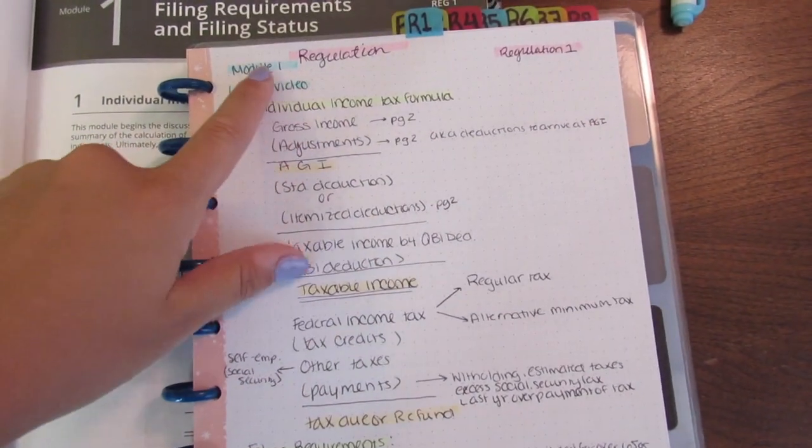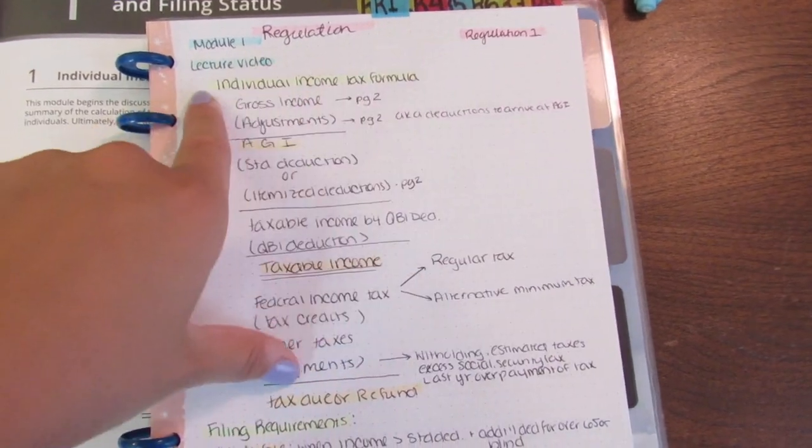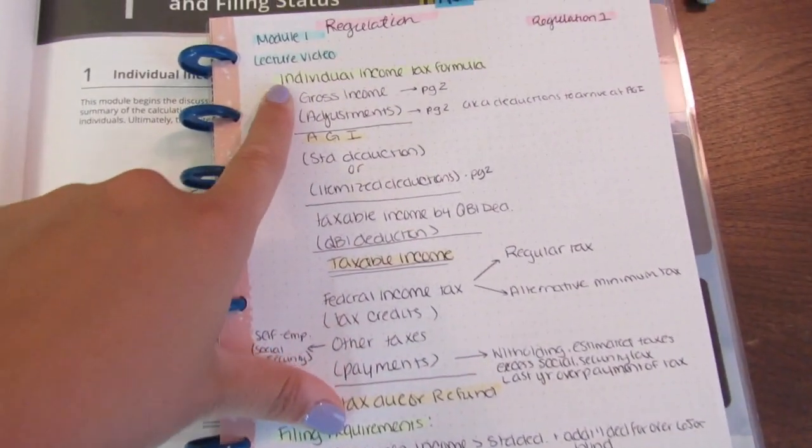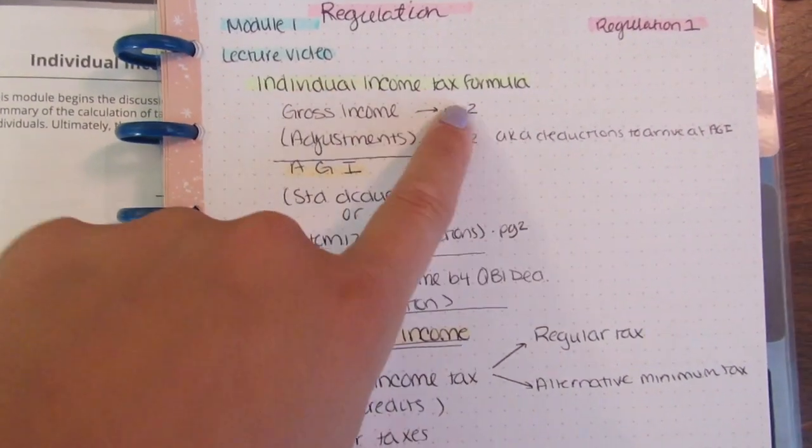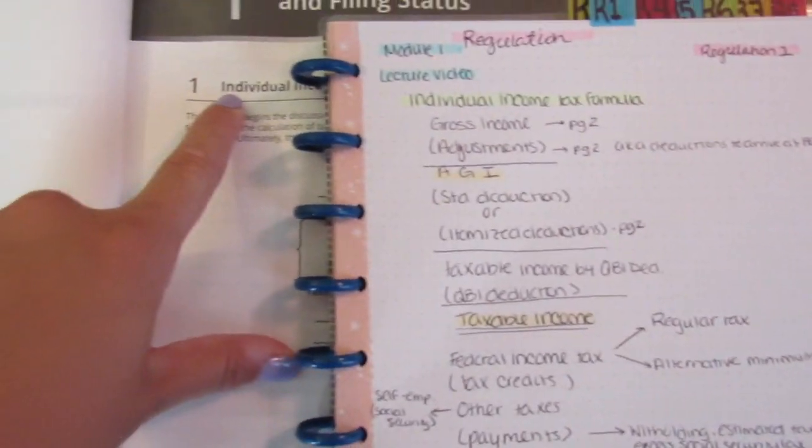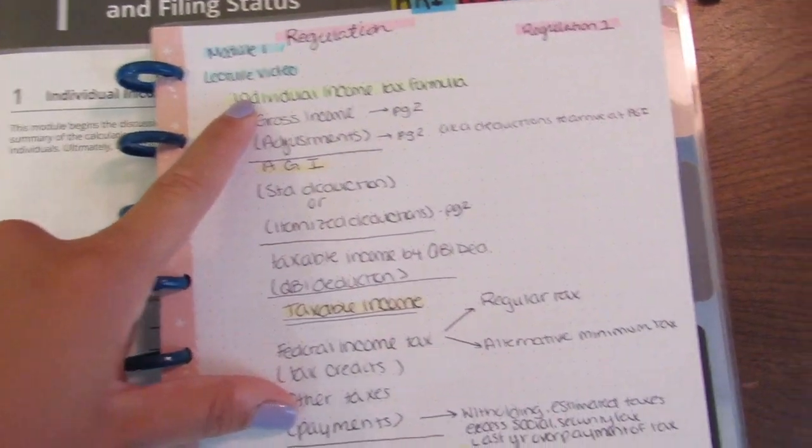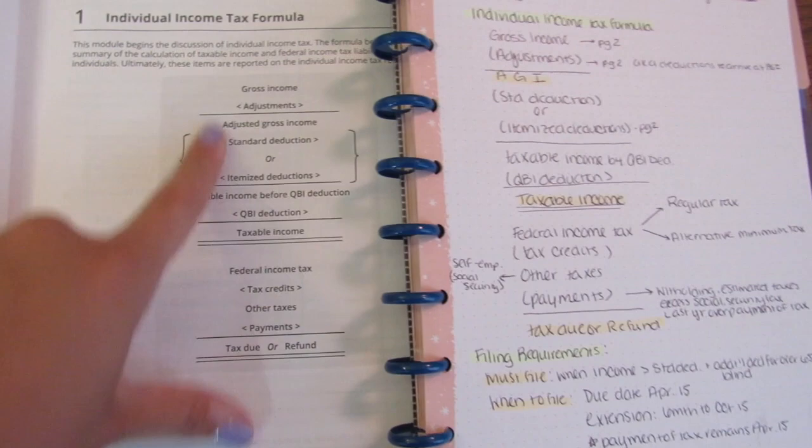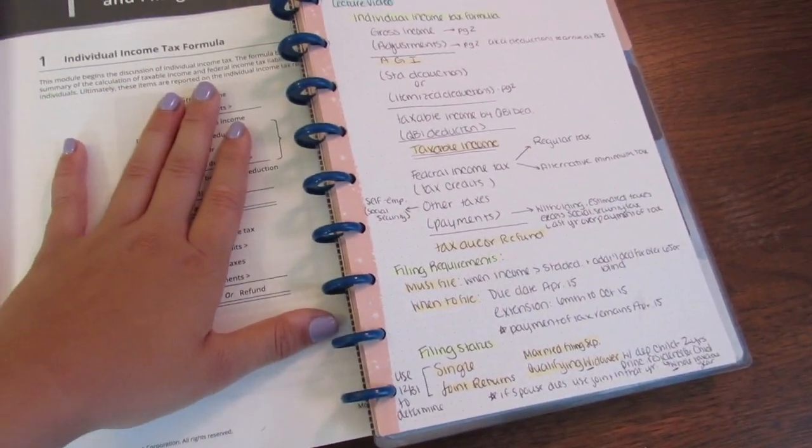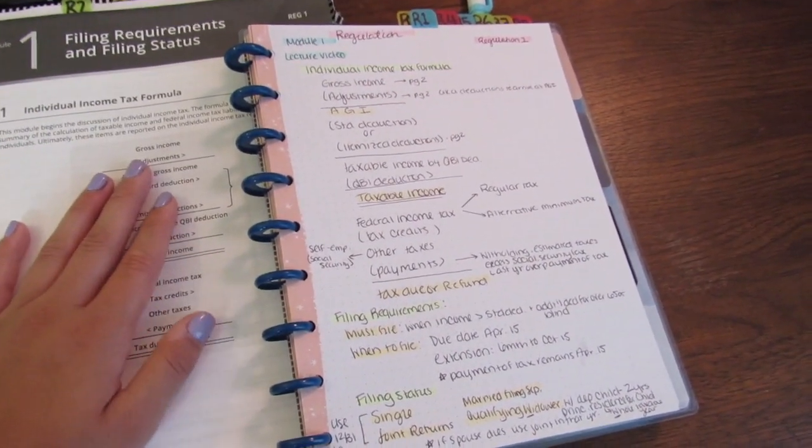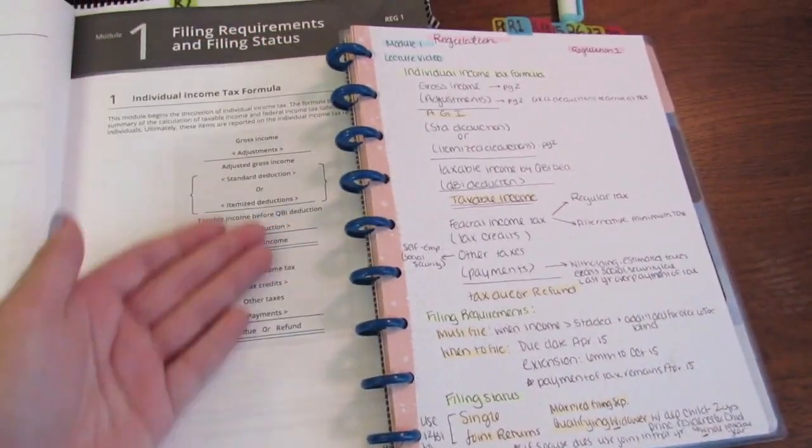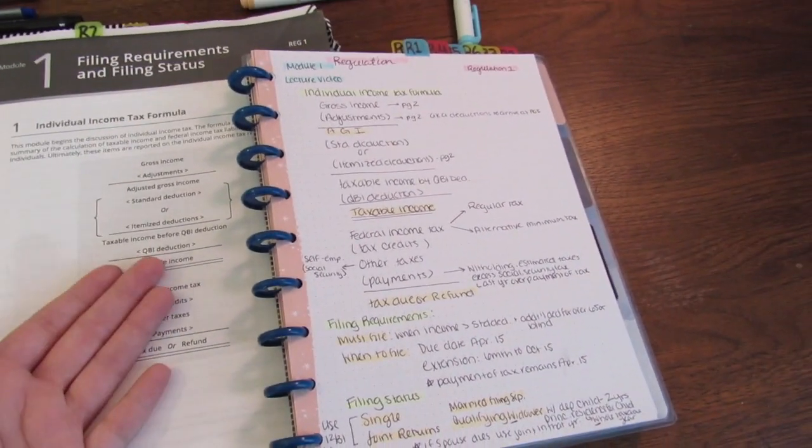I would write down module one regulation regulation one and this was part of the lecture video. Individual income was the main heading as you saw here so that was highlighted in yellow, then we go right into the main formula. This is a very important formula so I knew that I needed to write it down even though it takes up almost a whole page in the textbook, this was a big thing.